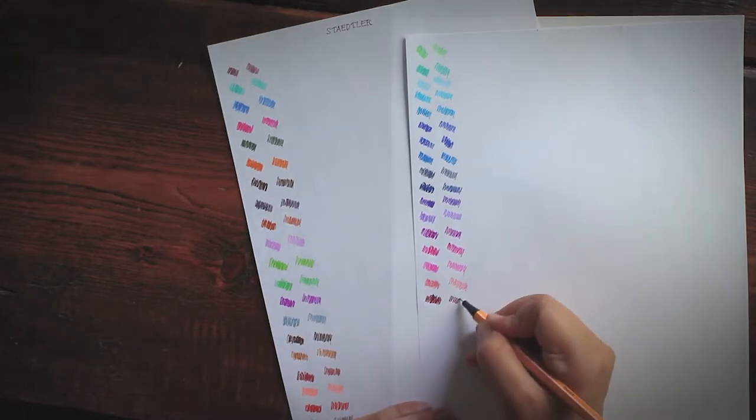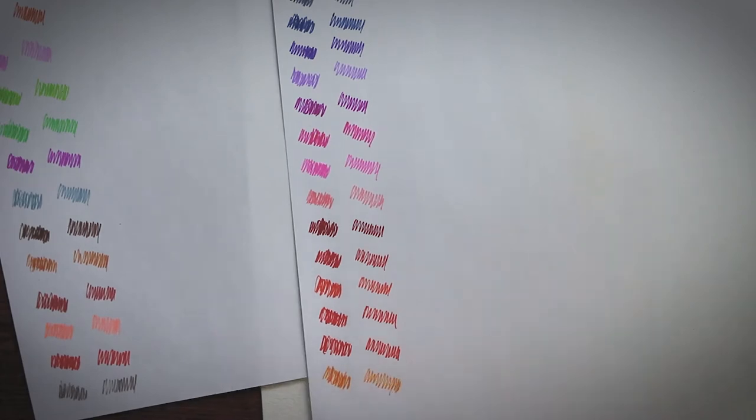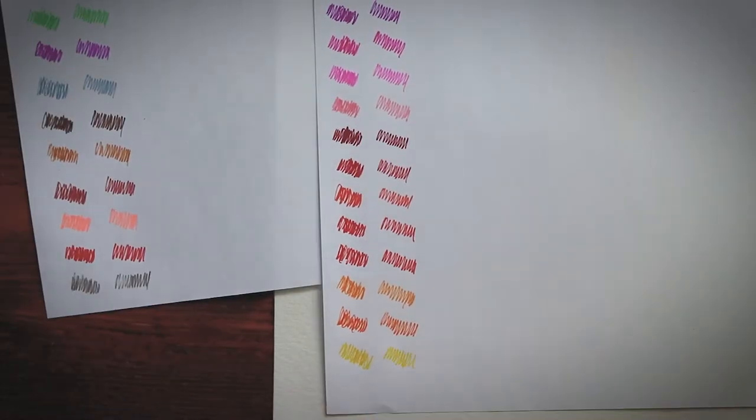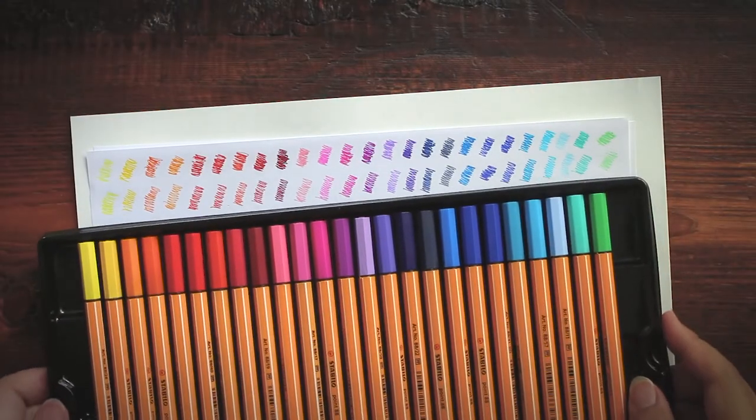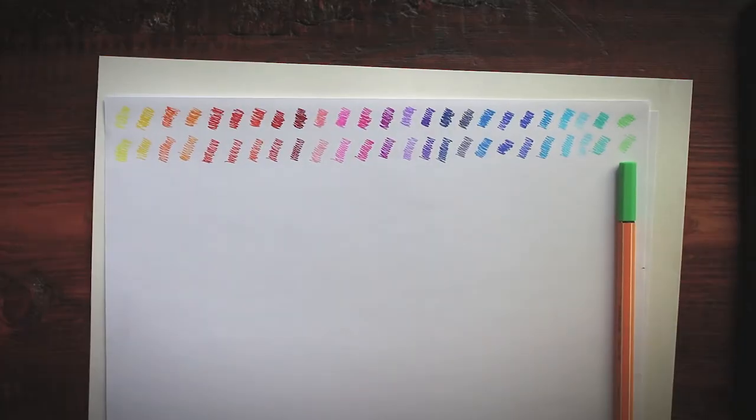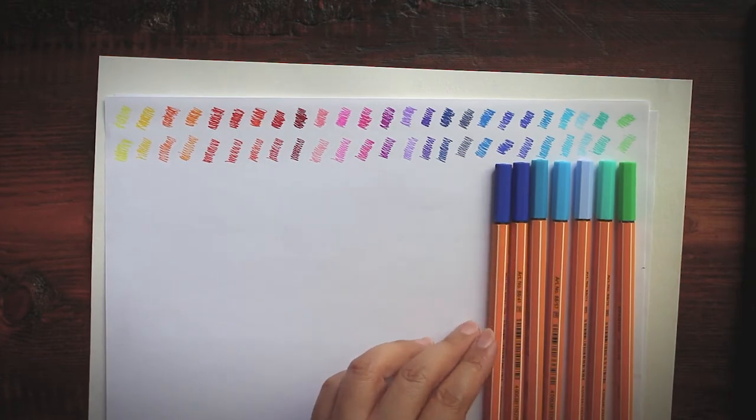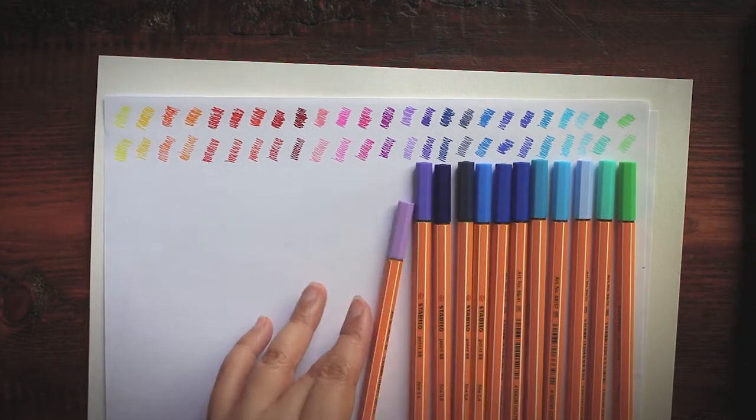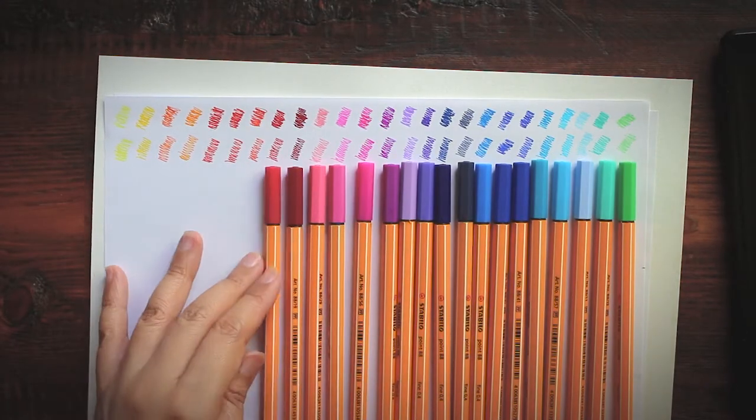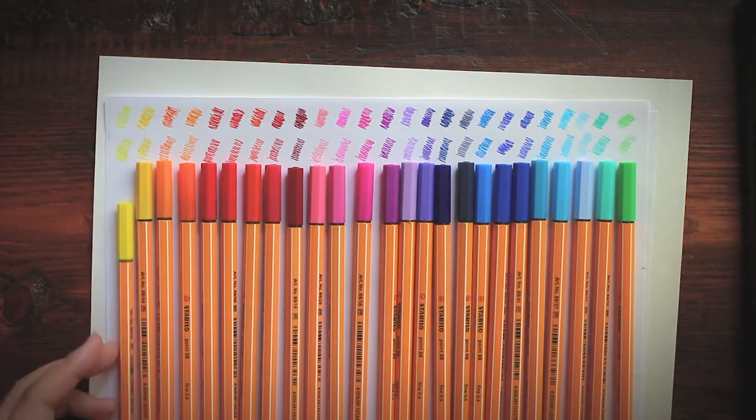It says in this package that the pens are made in Germany. But if you go to the Stabilo website, they have a sustainability disclosure there that says only 70% of their products are made in Germany. So if that fact sort of confused you, let me clarify. This Stabilo Point 88 and most of their ink-based pens are manufactured directly in Germany. But Stabilo's wooden pencils are made in Czech Republic and some other products are produced in Malaysia.